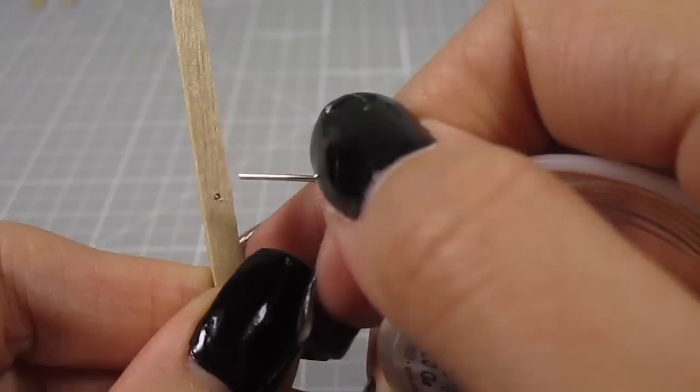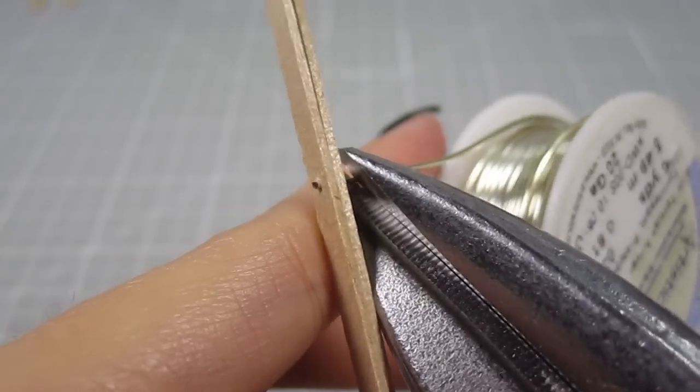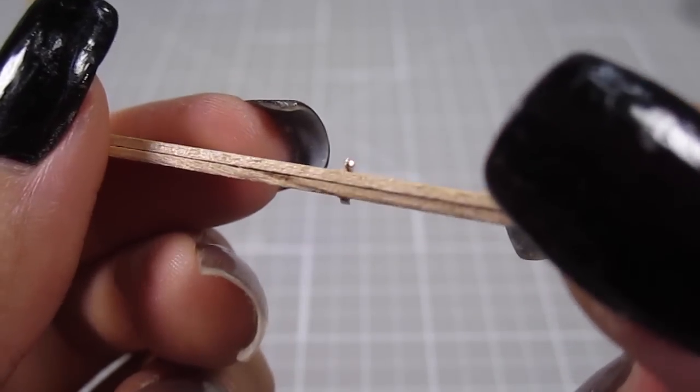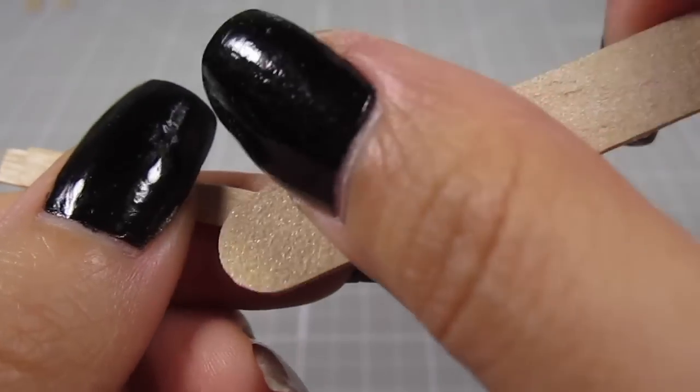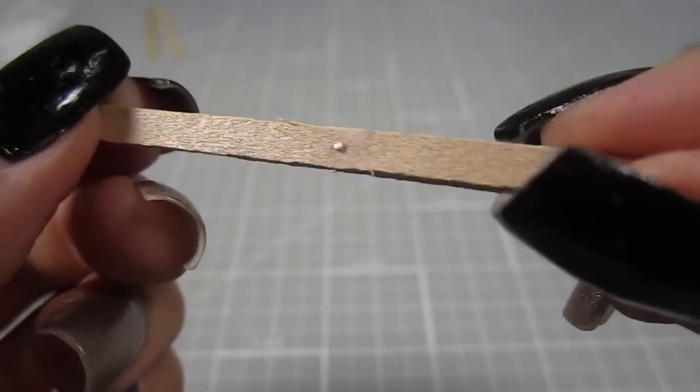Then I take some 20 gauge wire and stick it through the holes. Cut off the excess wire. My shears don't allow me to get a really flush cut so I'm using a file to sand down as much of the excess wire as possible. There, that looks better.